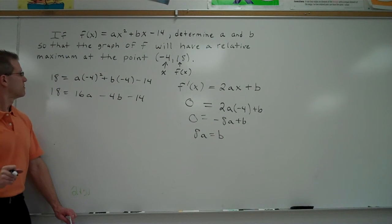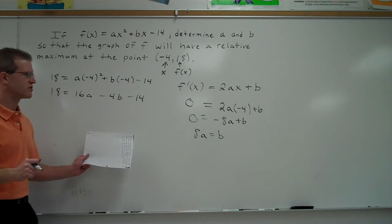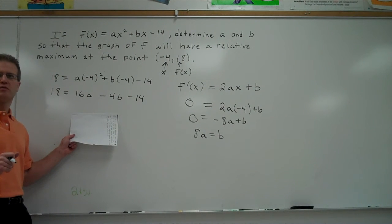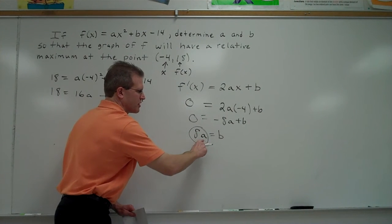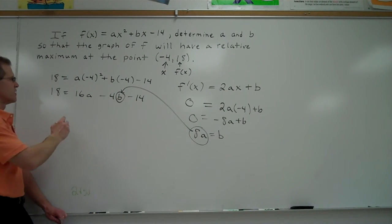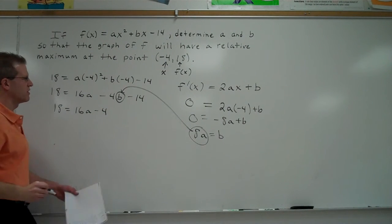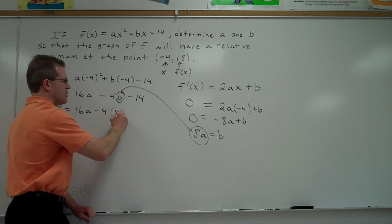Any questions about that part? Question? No. No? Okay. Now, we have two equations and two variables. How could we use these two equations together to maybe figure out what a and b represent? Plug 8a in for b. Substitution. B is equal to 8a. So every place I see a b up here, I can substitute it at 8a. So I'm going to have 18 equals 16a minus 4. In place of b, I'm going to plug in 8a. Because b equals 8a, I can do that.